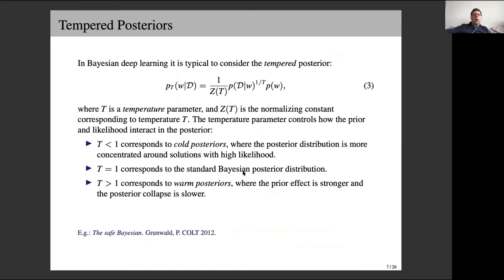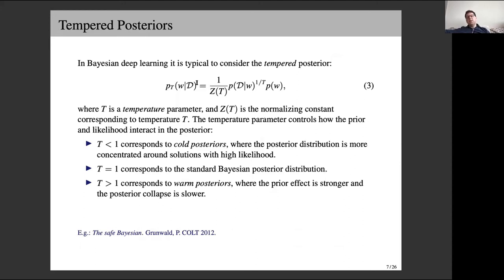Another challenge to the Bayesian approach in deep learning has involved posterior tempering — raising either the likelihood or the posterior to a power one-over-T. If T is less than one, we have a cold posterior, giving the likelihood higher weighting. If T equals one, we have the standard Bayesian posterior. If T is greater than one, we have a warm posterior where the prior has a stronger effect.